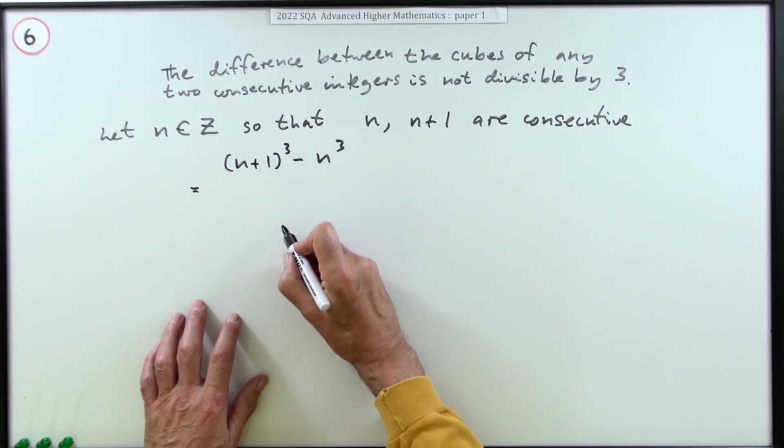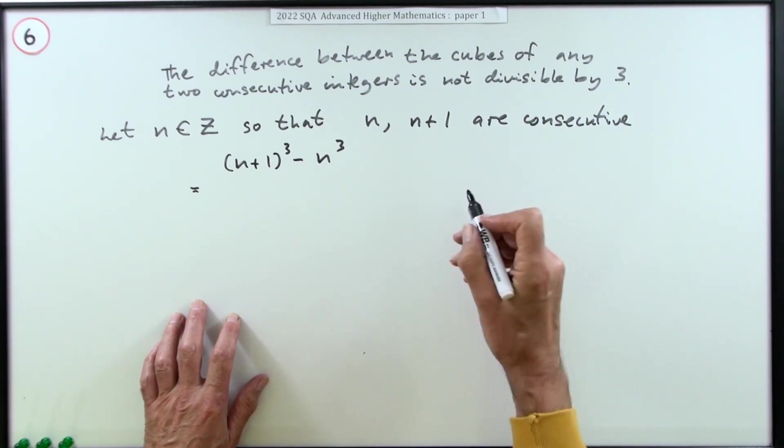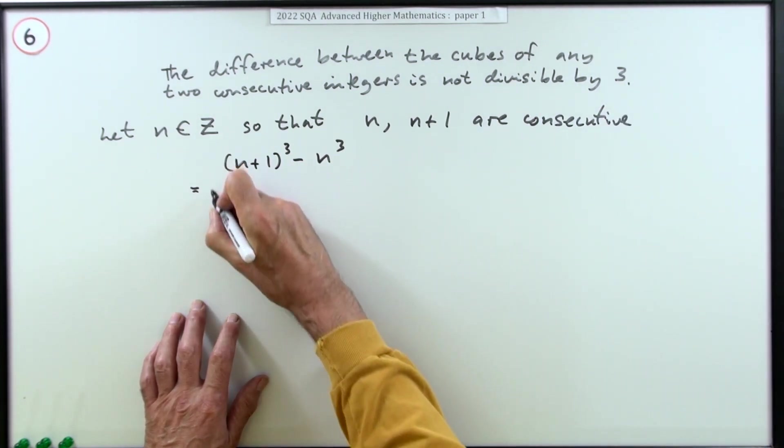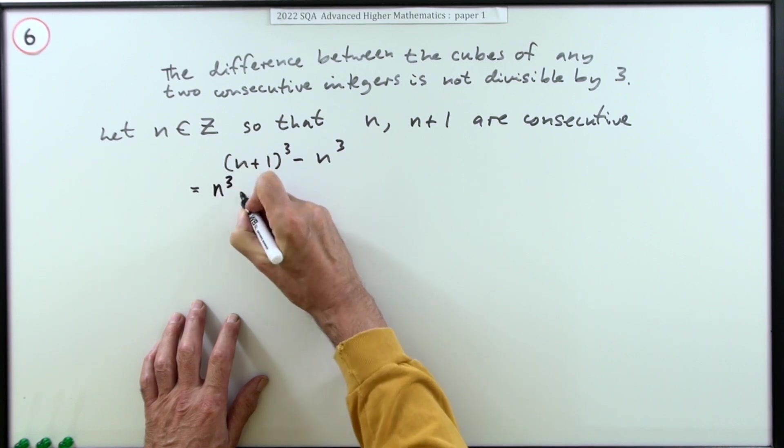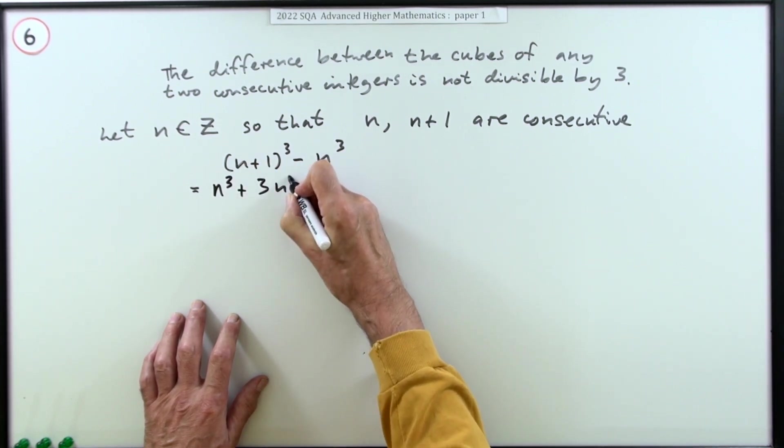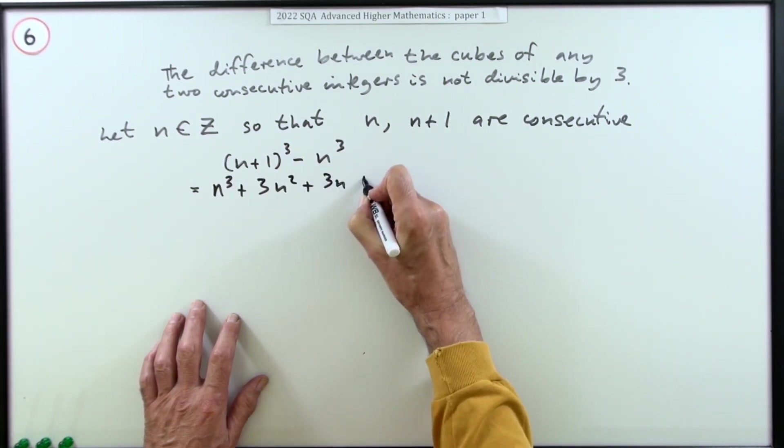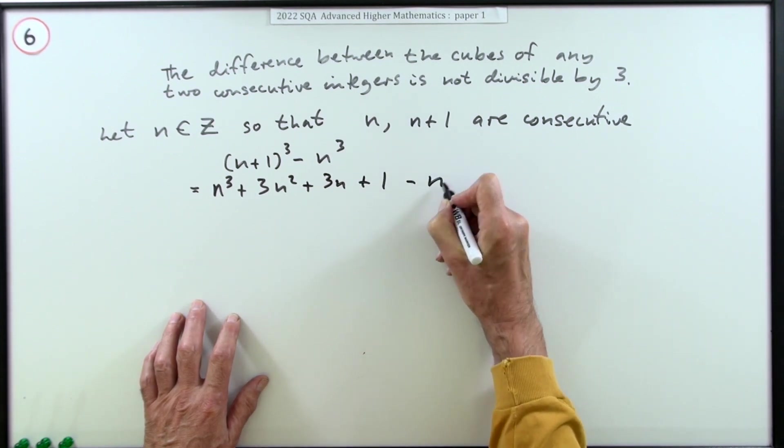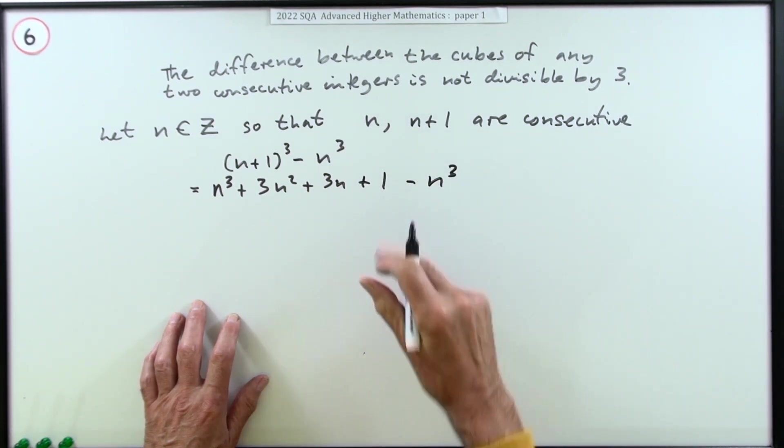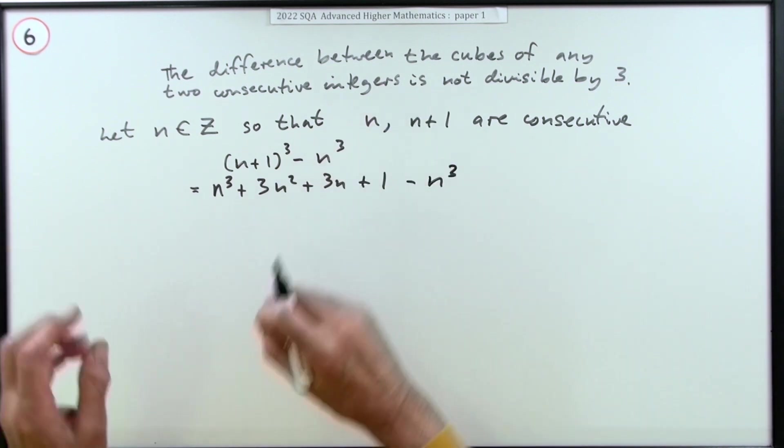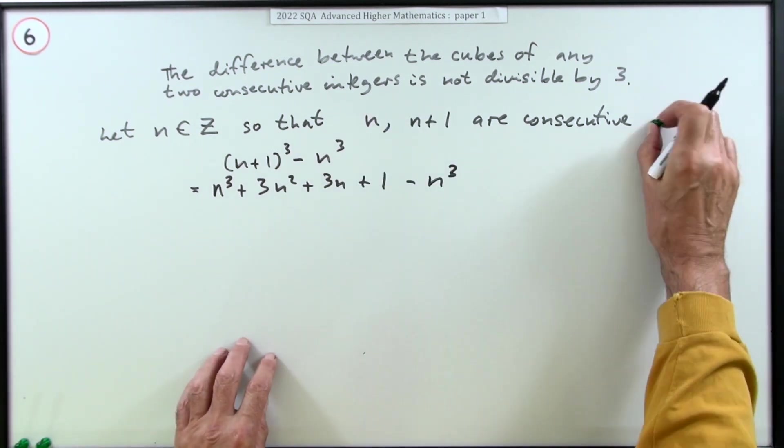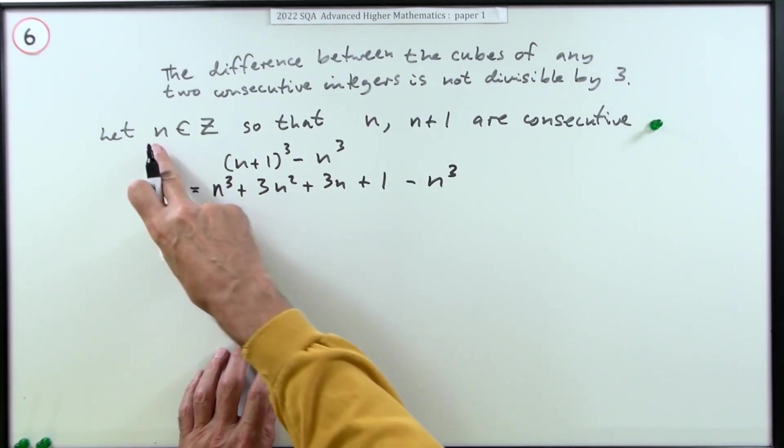So n cubed plus three n squared plus three n plus one minus the n cubed. At that point you've got two of the marks already. One for introducing the variable, making sure you've got the correct set and saying you've got the two consecutive parts. The next part's for just doing what it says in the question, obtaining the difference in the cubes.